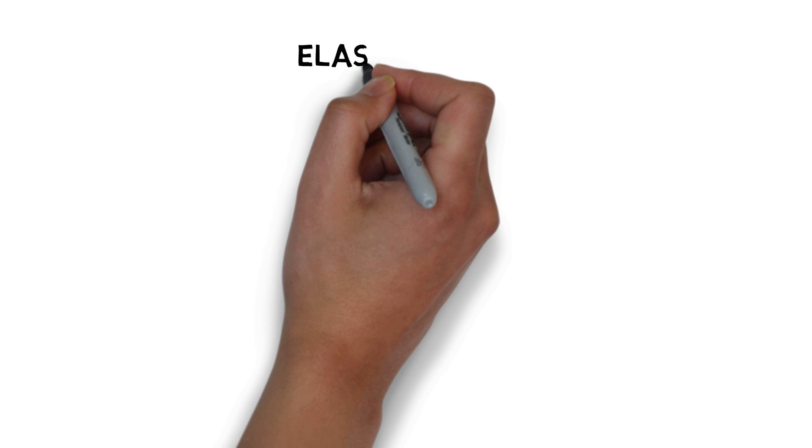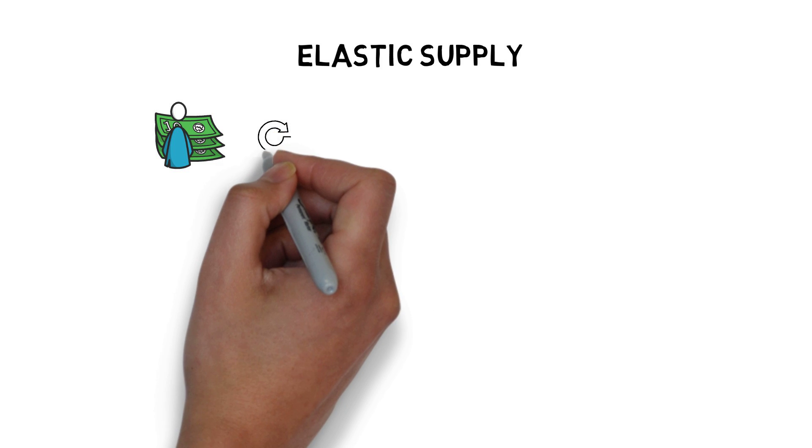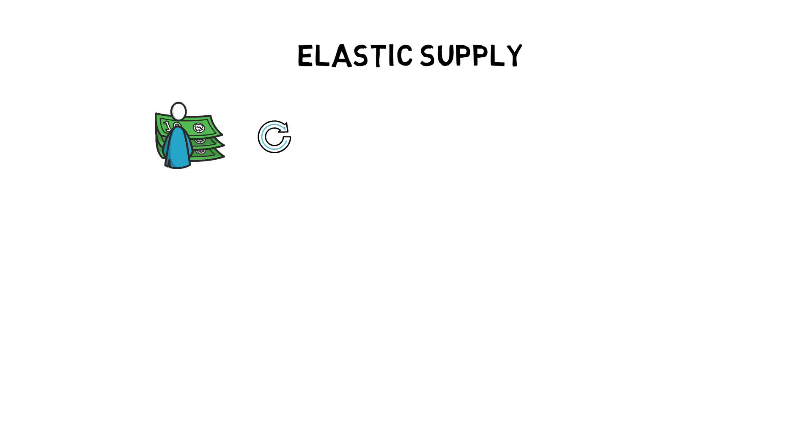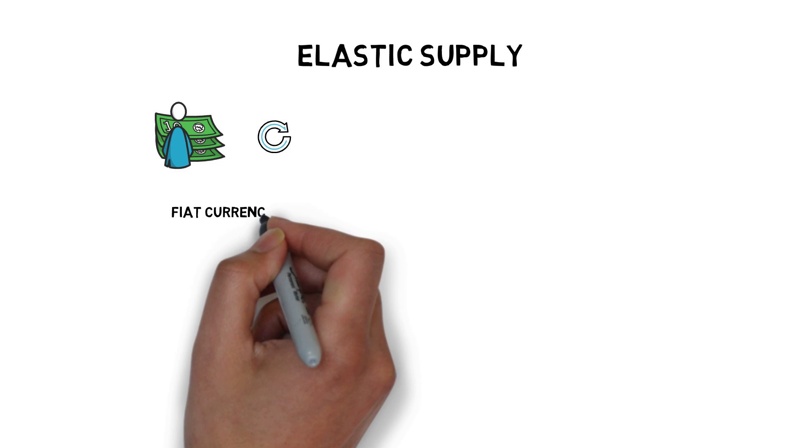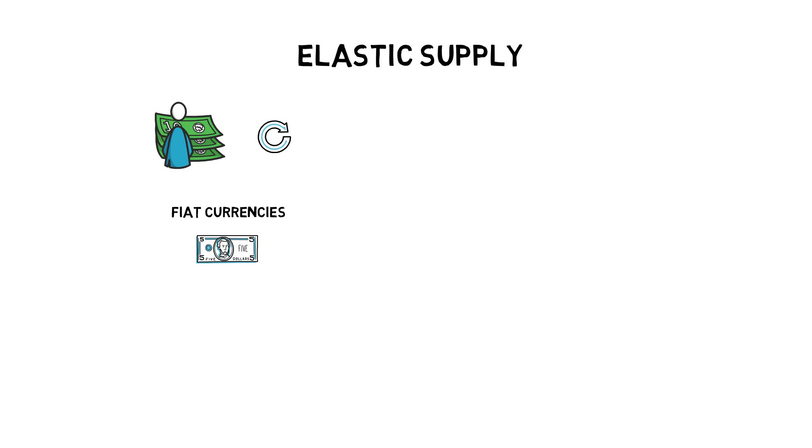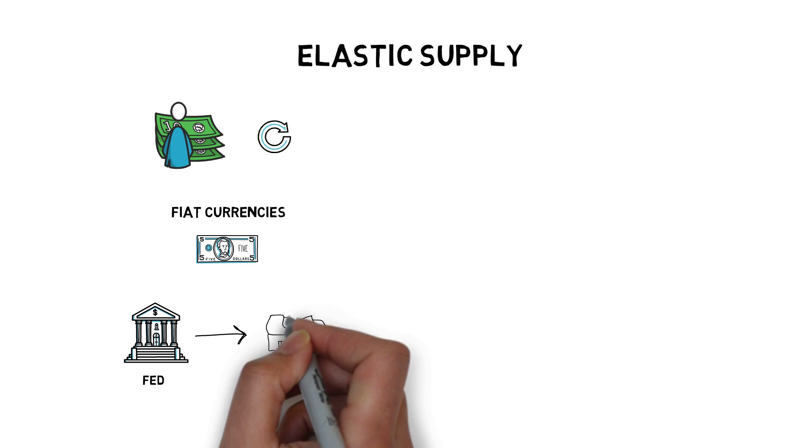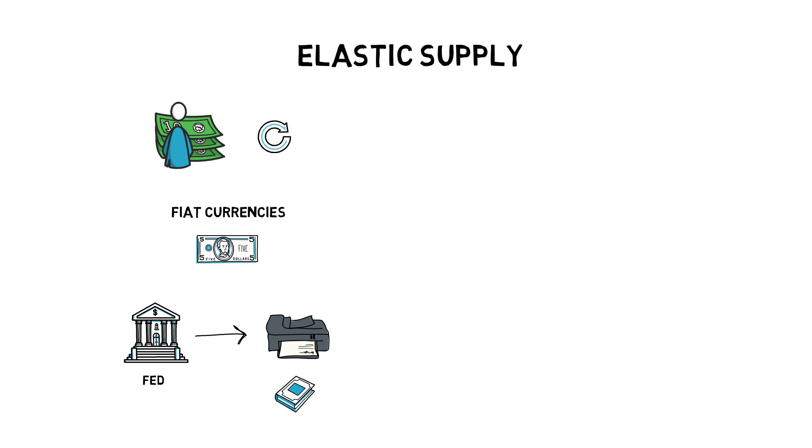When it comes to money, having an elastic supply allows for printing new money or removing money from circulation depending on the demand. Fiat currencies, such as the US dollar, are good examples of money with an elastic supply, as the Fed can decide to print more money if there is more demand for it. They can actually also decide to print it without an increase in demand, but that's another story.